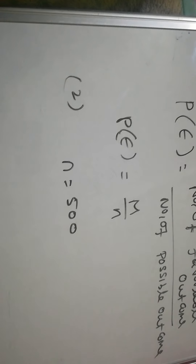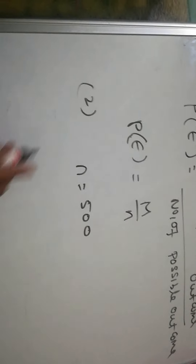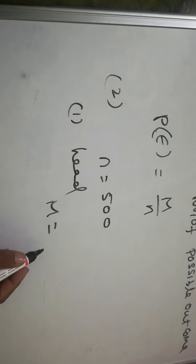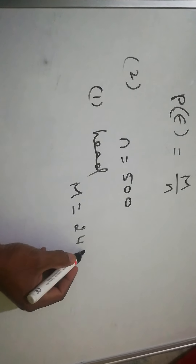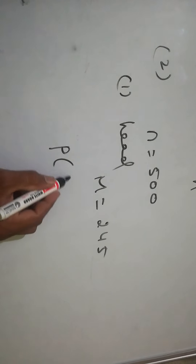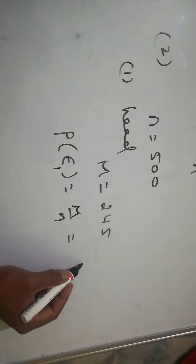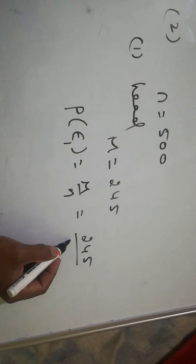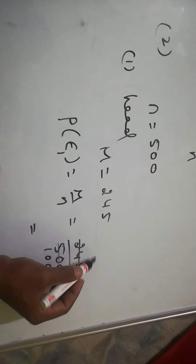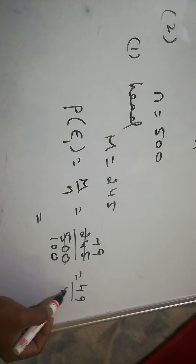We get heads 245 times and tails 255 times. The first question asks for the probability of a head. So the number of favorable outcomes M equals 245. Using the formula P of E1 equals M by N, that is 245 divided by 500. Cutting by 5, the answer is 49 by 100.